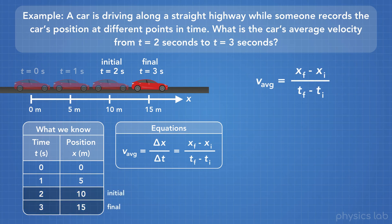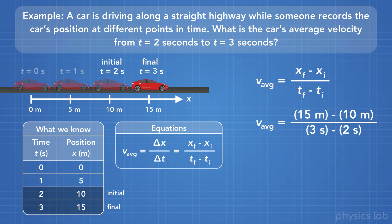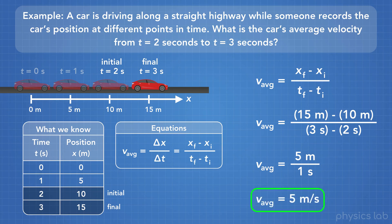Our initial point is when time equals two seconds and the car's position is 10 meters. The final point is when time is three seconds and the position is 15 meters. Plugging into our equation: 15 meters for the final position, 10 meters for the initial position, 3 seconds for the final time, and 2 seconds for the initial time. 15 minus 10 gives us 5 meters, and 3 minus 2 gives us 1 second. 5 divided by 1 gives us 5, so the average velocity of the car between these two points is 5 meters per second.